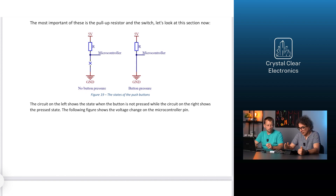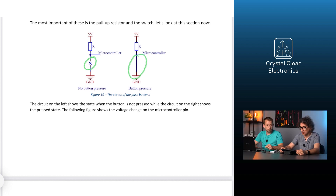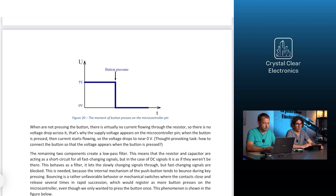In our figure, instead of the switch, we can see a gap and a wire on the left and right-hand side of the diagram respectively. The circuit on the left shows the state when the button is not pressed, while the circuit on the right shows the pressed state. We can follow the voltage change on the microcontroller pin. When we are not pressing the button, there is virtually no current flowing through the resistor, so there is no voltage drop across it — that's why the supply voltage appears on the microcontroller pin. When the button is pressed, current starts flowing, so the voltage drops to near zero.